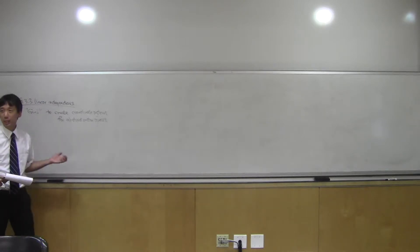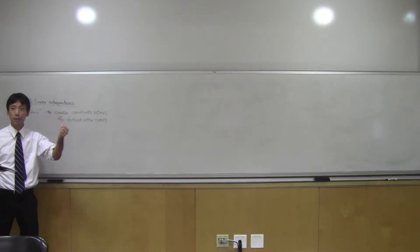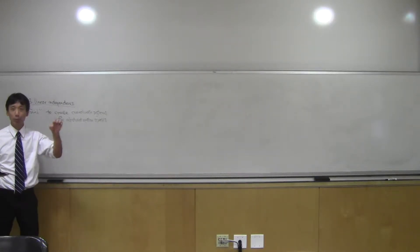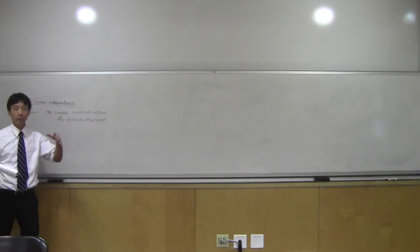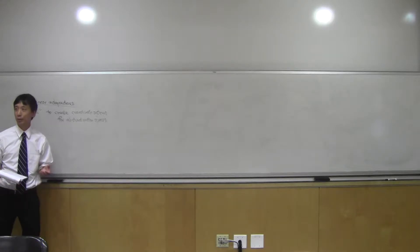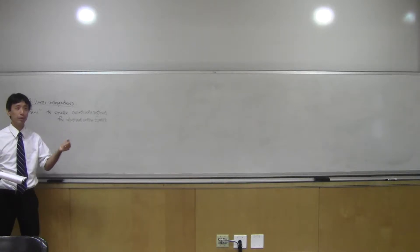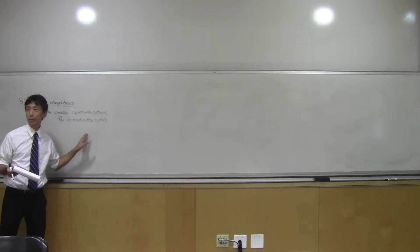In Euclidean space, you have a coordinate system. Every point in Rn is associated with n numbers. For an abstract vector space, there may be no immediate coordinate system, but you'd like to have one — you'd like to say this vector is associated with a certain set of numbers.